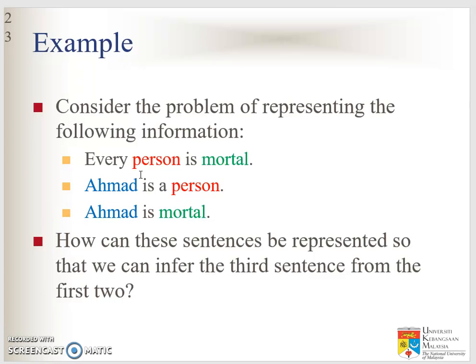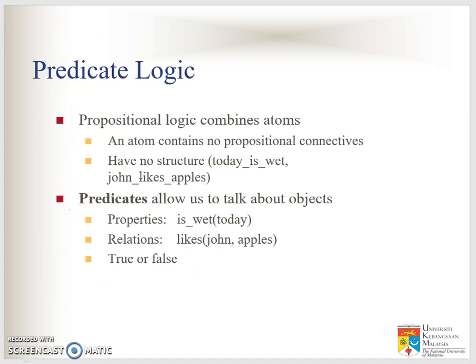To overcome this generalization problem, we have predicate logic. Propositional logic combines atoms, and atoms contain no propositional connectives and have no structure — the whole sentence is one variable. For example, 'today is wet,' 'John likes apples.' If John likes apples, John likes orange, John likes grapes, you have three separate sentences there.